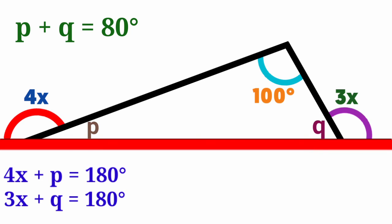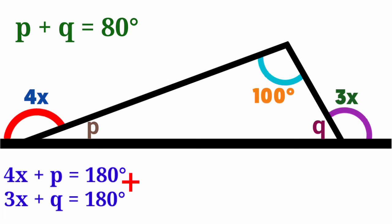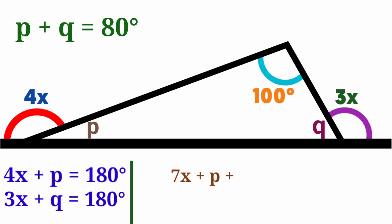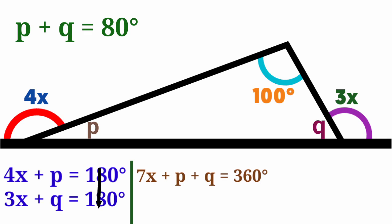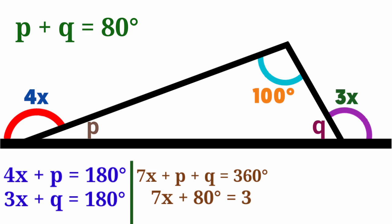We now have two similar equations, so we add them together: 4x plus 3x is 7x, plus P plus Q, equals 360 degrees. Since P plus Q is 80 degrees from our earlier equation, we substitute to get 7x plus 80 degrees equals 360 degrees.